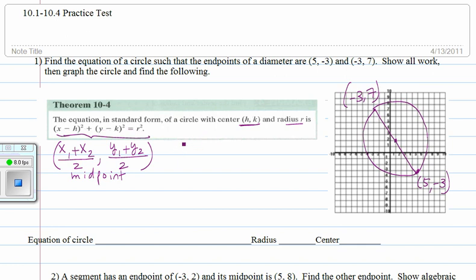So we're going to use that to find the center, which is h, k. So that will be negative three plus five divided by two, comma, seven plus negative three divided by two. So that gives us two over two, which is one, and four over two, which is two.